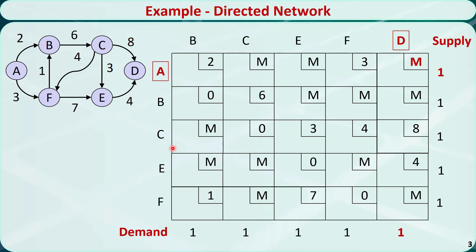This is a balanced transportation problem. We can solve this problem using the transportation simplex method. The optimal solution is shown in the tableau, which corresponds to this path in the network. The z value is 14.